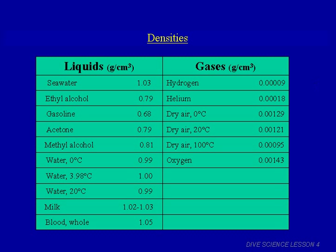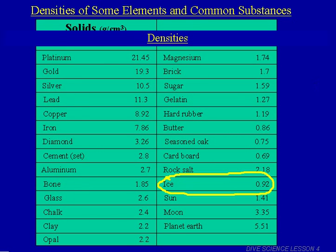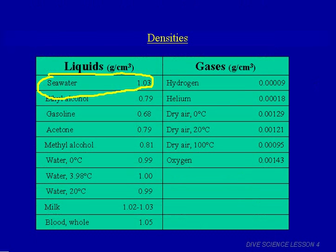Here are some liquids. Water at 3.98 degrees Celsius has a density of 1 gram per milliliter. To know if something will float or sink in water, compare its density to water's. Ice has a density of 0.92 grams per cubic centimeter — less dense than water — and we know ice floats. Anything with a density less than 1 will float in water. Seawater at 1.03 g/cm³ is a little more dense than fresh water, so seawater sinks below fresh water. In a bay or estuary, saltier water sits at the bottom and fresher water at the surface.